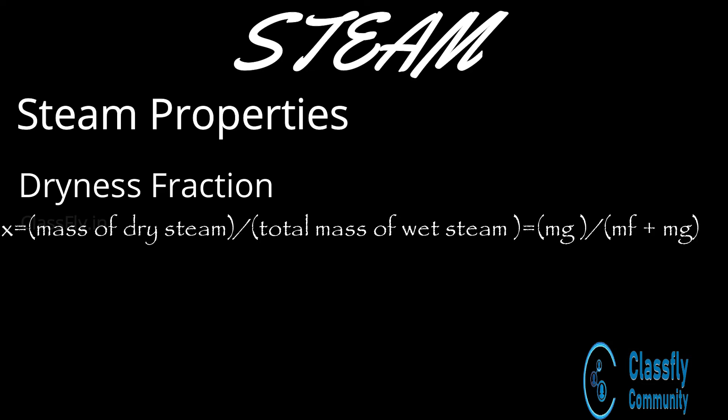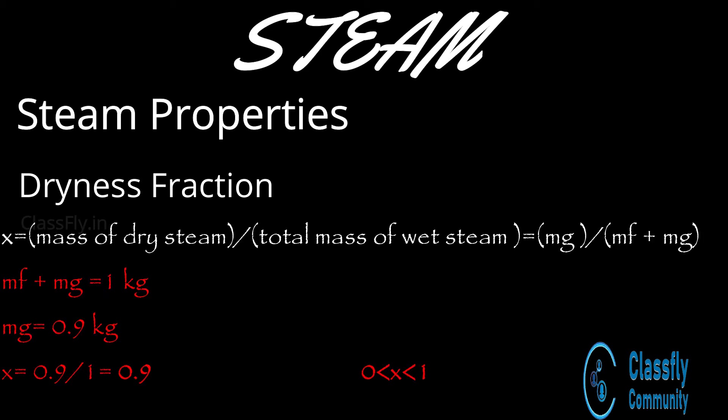Dryness fraction is the ratio of the mass of dry steam present in the wet steam to the total mass of the wet steam. In the formula, mg is the mass of dry steam and mf is the mass of suspended water particles. For example, if there is 1 kg of wet steam which contains 0.9 kg of dry vapor, then its dryness fraction will be 0.9.